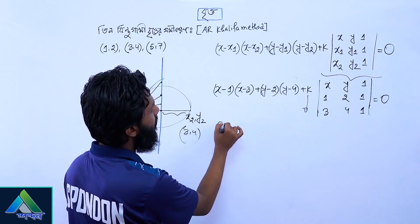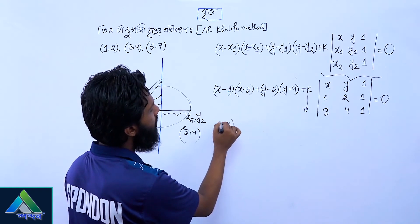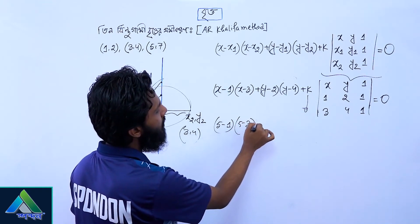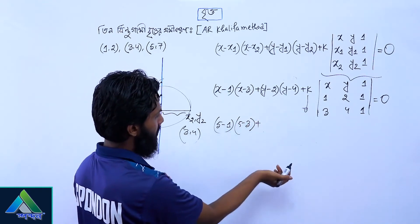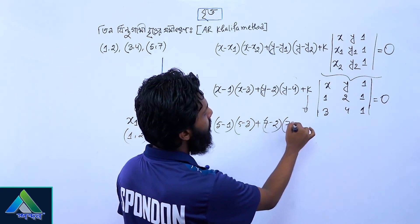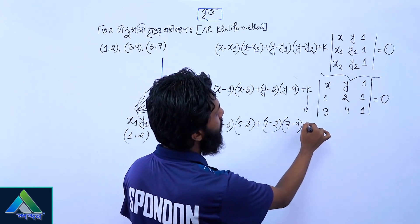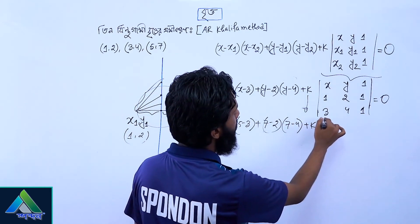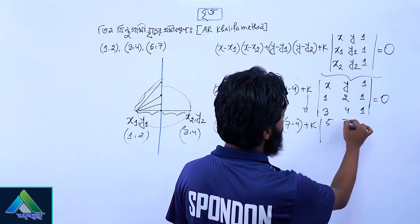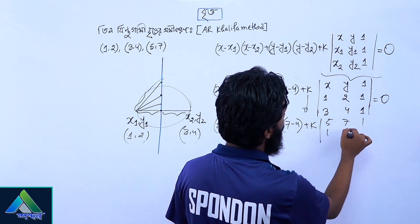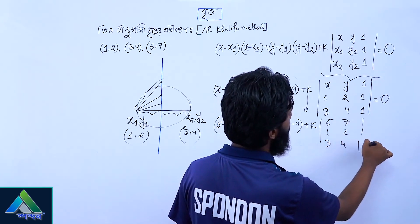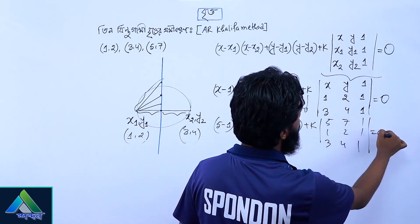Substituting the values: 5 minus 1, into 5 minus 3, plus 7 minus 2, into 7 minus 4, plus k times the determinant of 5, 7, 1 over 1, 2, 1 over 3, 4, 1, equal to 0.